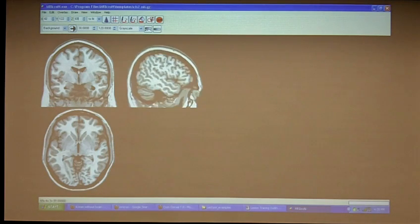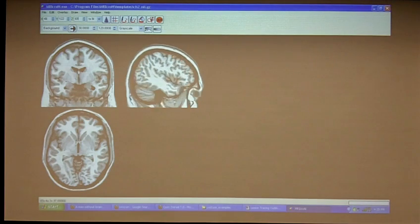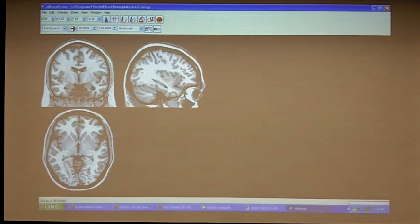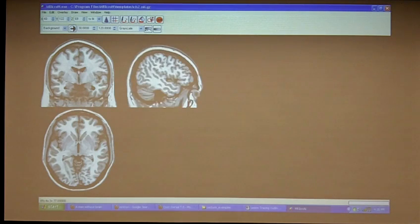So anyway this is the sylvian fissure here separating the temporal lobe from the frontal lobe. You can see it's one of the bigger ones where you're like whoa there's a big hole there, but it's natural, it's supposed to be there so it's something you have to look out for.